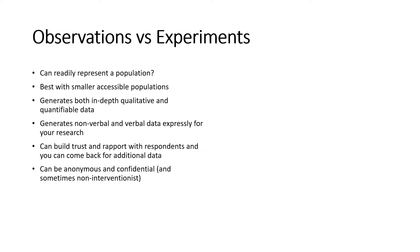Now let's compare observations with experiments. Observations are carried out where a researcher observes a sample of a population. One might argue it represents a population, but observing six people is far easier than observing hundreds. The same issue applies to experiments — controlling and experimenting with fewer people is easier — so both methods are not the best for reaching a large number of respondents.